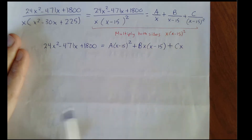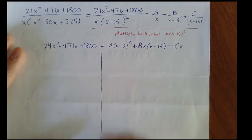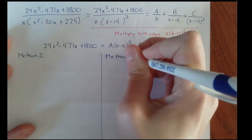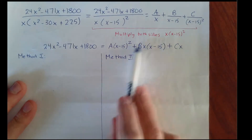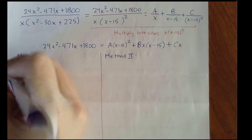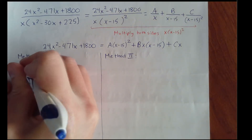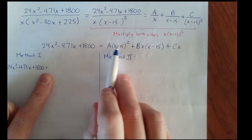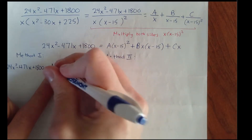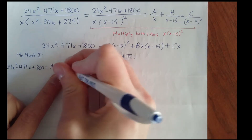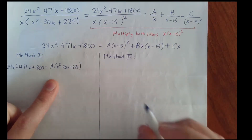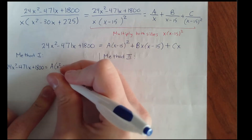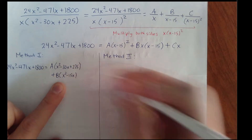Now it's time to solve for A, B, and C using two methods. Method one is to multiply everything out. On the right side, I multiply x minus 15 times itself to get A times x squared minus 30x plus 225, then multiply x times x minus 15 to get plus B times x squared minus 15x, and then plus C times x.